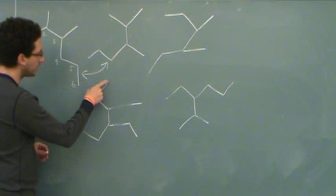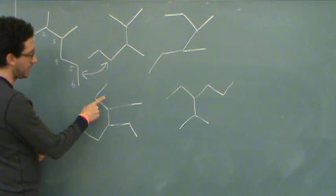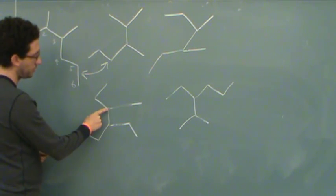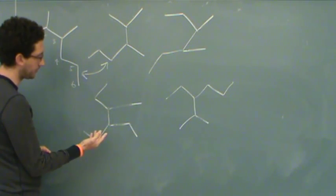This one is 1, 2, 3, 4, 5, 6. That's also a hexane. But it is a 3-methyl, 4-ethyl. So really the ethyl goes first.